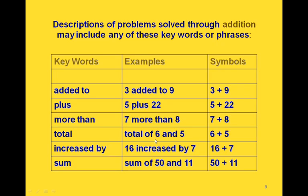When we do word problems, we want to be able to pick out keywords or phrases that signal us to do addition. Here's a good list: added to, plus, more than, total, increase by, and sum — those all signal addition. So 3 added to 9 would be 3 plus 9; 5 plus 22; 7 more than 8; the total of 6 and 5 is 6 plus 5; 16 increased by 7 is 16 plus 7; and the sum of 50 and 11 tells us to add 50 plus 11.